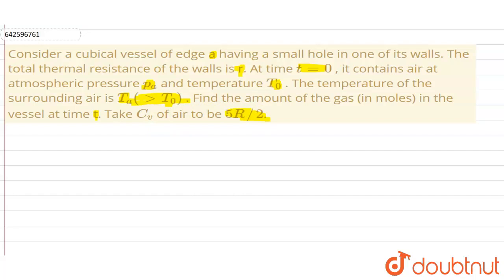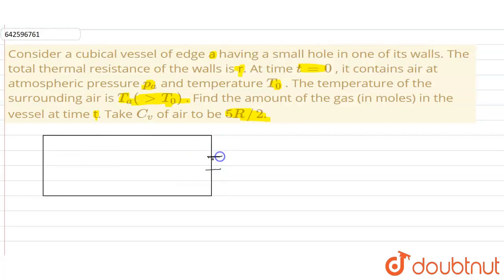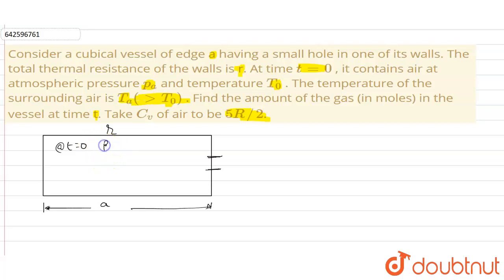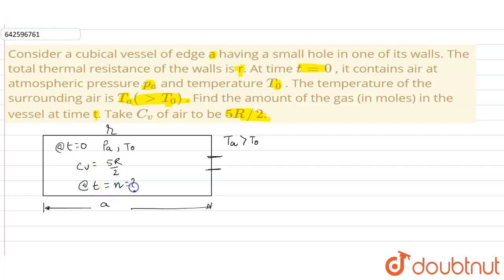Take Cv of the air to be 5R/2. So in the given question, we have a cubical vessel with a hole in one wall. The length of the cubical edge is A, so the volume will be A³. The total thermal resistance of the wall is r. At time t = 0, it contains air at atmospheric pressure Pa and temperature T0. The outside temperature is Ta, which is greater than T0, and Cv for air is 5R/2.